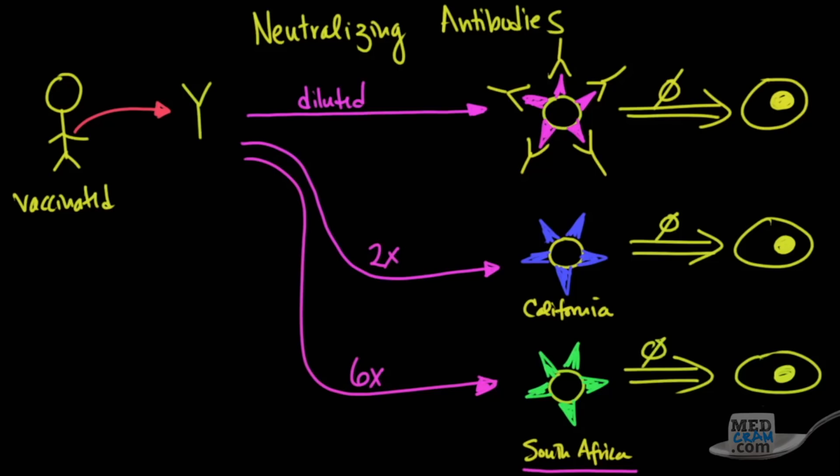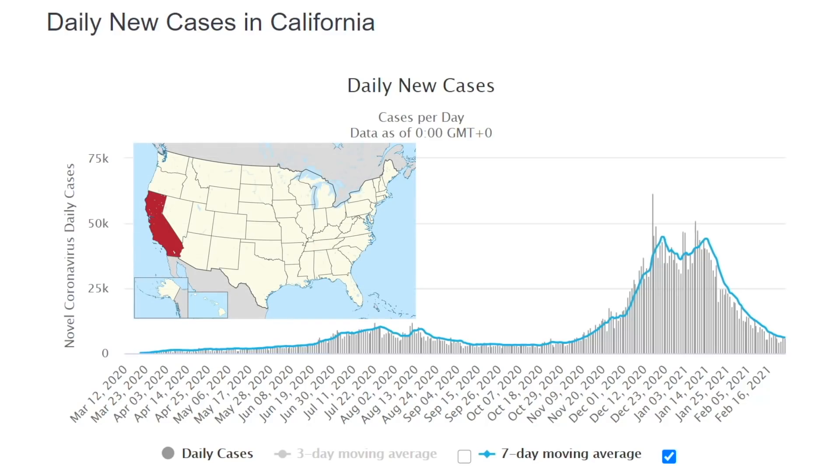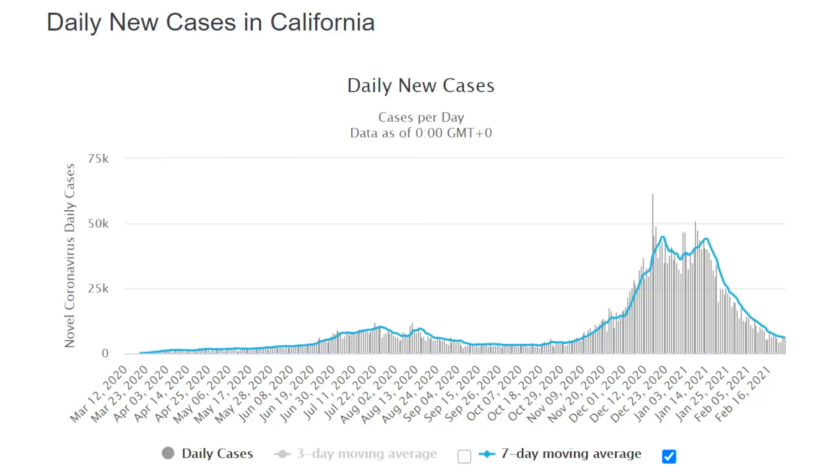Remember, at one point during the winter epidemic here in California, 50% of the COVID cases were deemed to be this California variant. And as we've showed you before, look what's happened to the daily new cases in California. They've come down. Daily new deaths in California are also coming down.